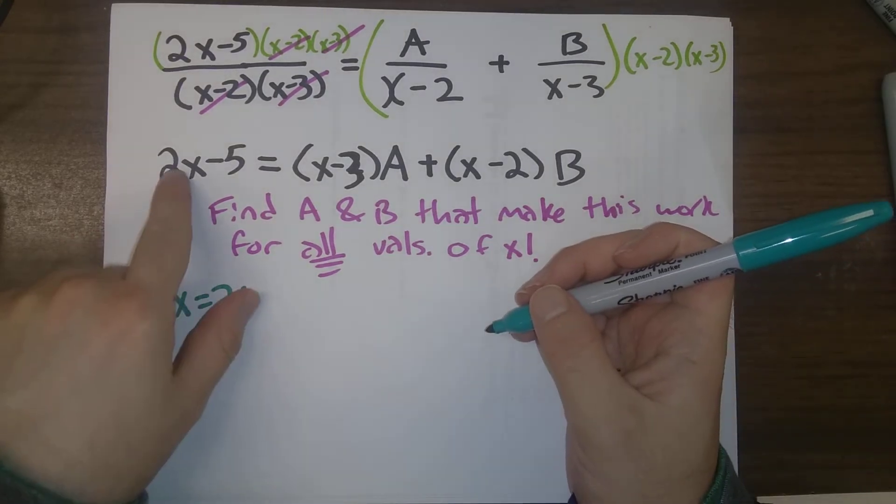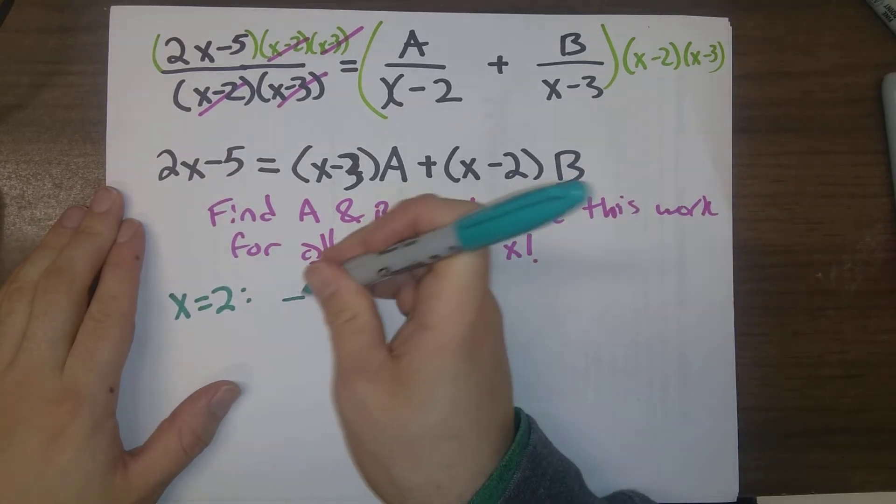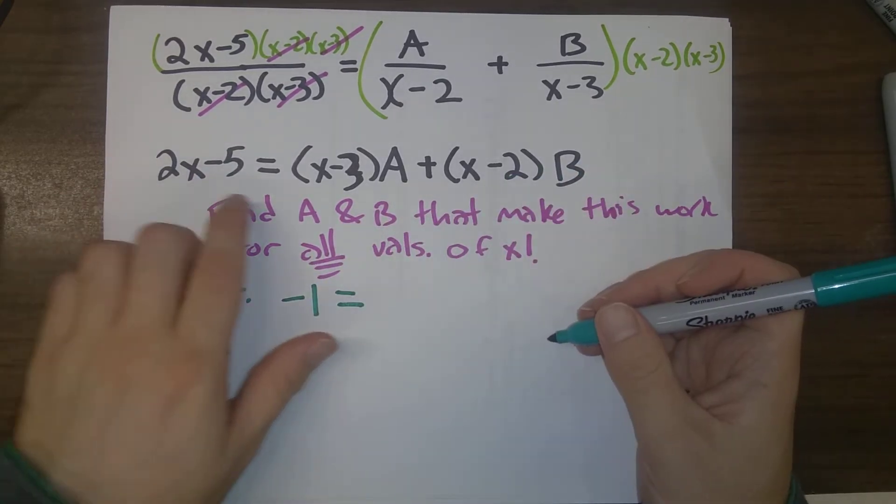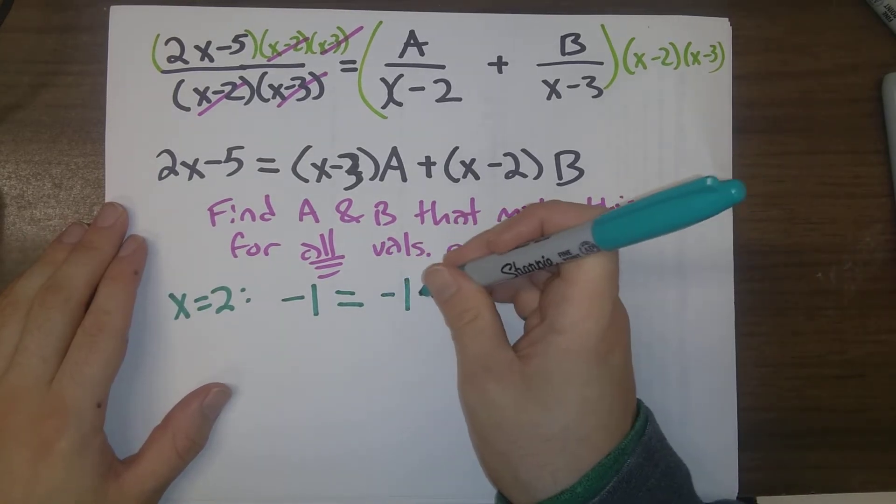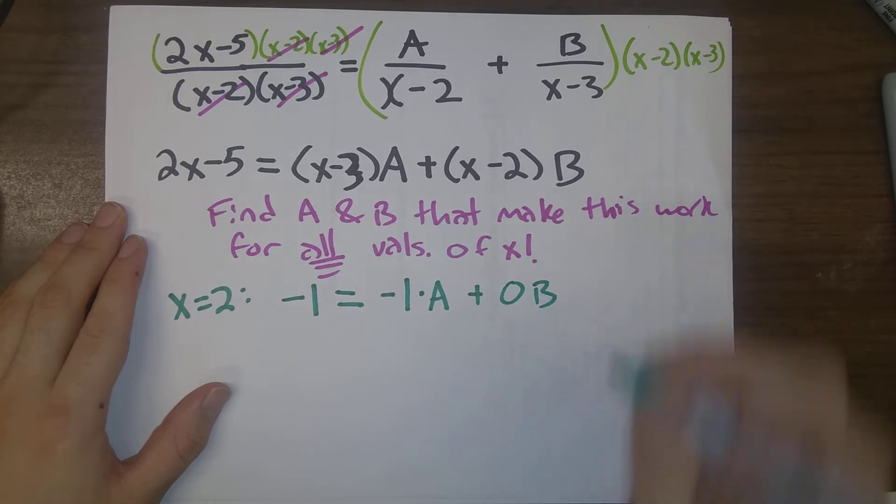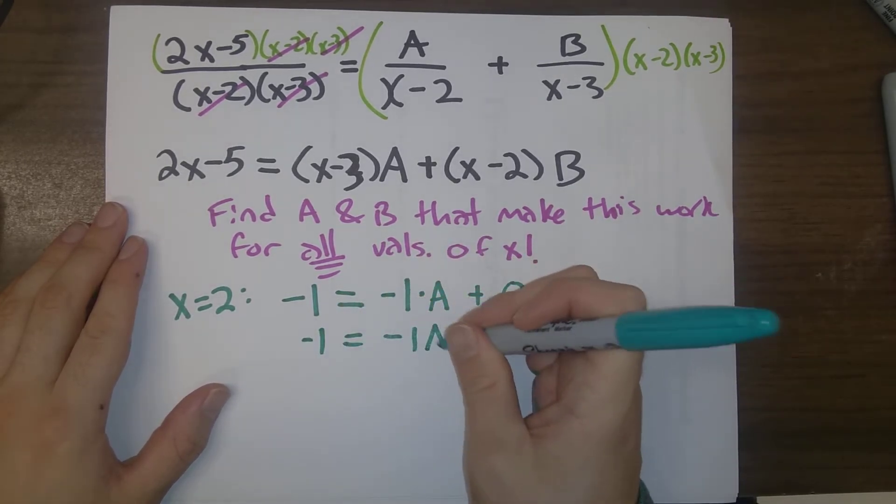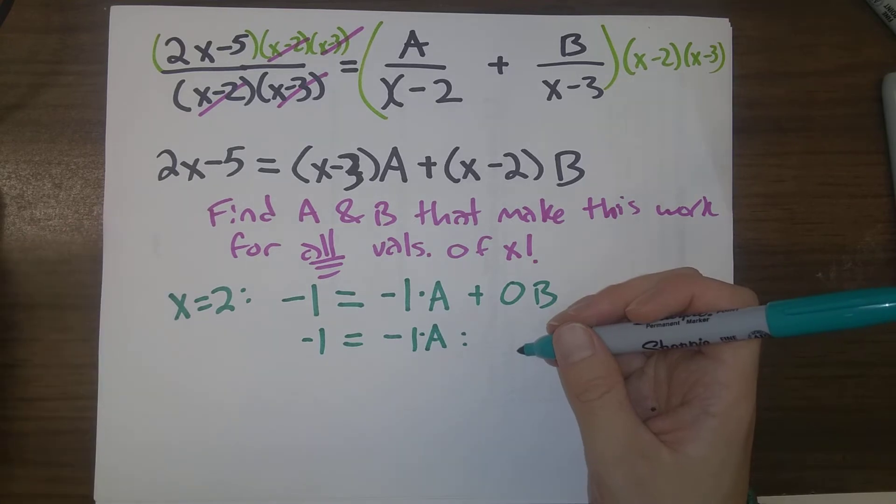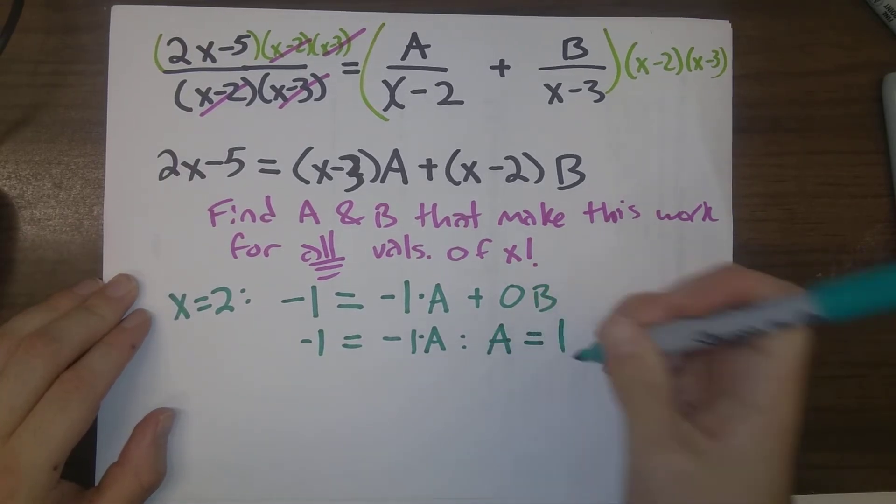So when we plug in x equals 2, we get 2 times 2 minus 5, that's minus 1. It's equal to 2 minus 3, that's minus 1 times A, plus 0 times B. So our equation is minus 1 equals minus 1 times A. And so this tells us that A is equal to 1.